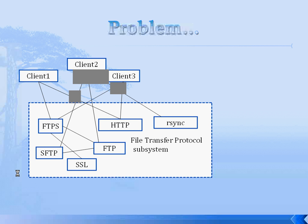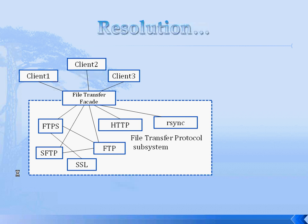This is a very simple pattern. Take the example of a file transfer protocol subsystem with multiple protocols implemented — FTP, FTPS, HTTP, etc. Multiple clients could refer to any of these protocols, or multiple of them, based on need. If you simplify this system, all clients will only interact with a file transfer Facade class, and that would in turn handle the request and pass it to the respective components or classes of the subsystem.